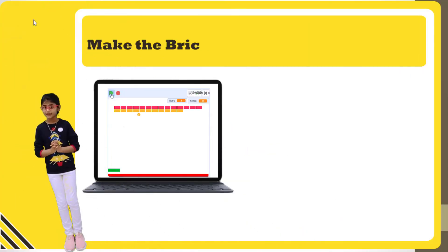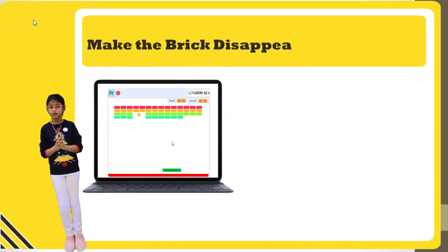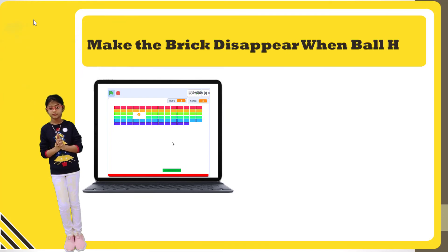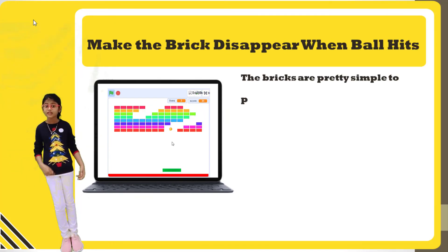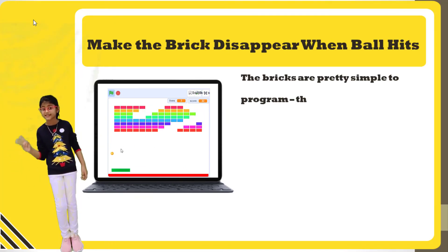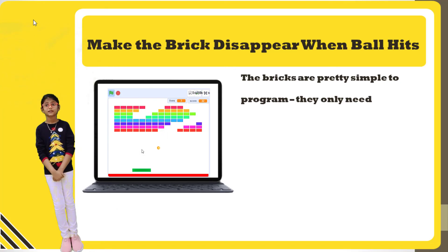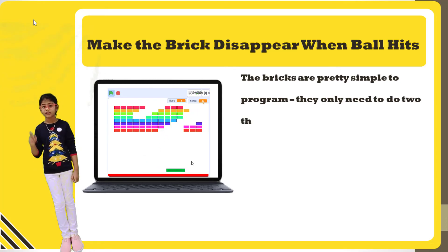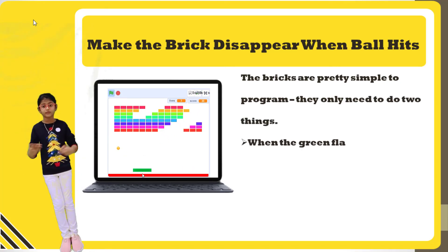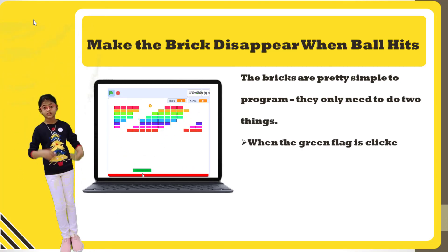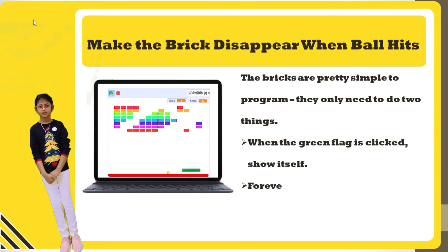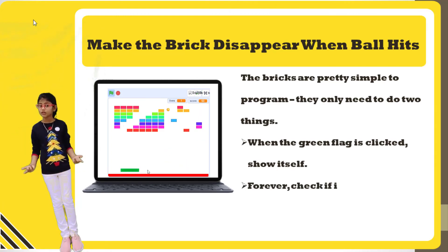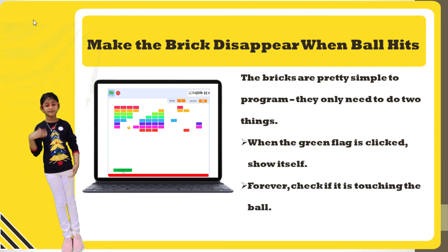Make the brick disappear when the ball hits it. The bricks are pretty simple to code — they need two things: when the green flag is clicked, show itself; when touching the ball, hide itself. The score will increase each time a brick is hit by the ball.